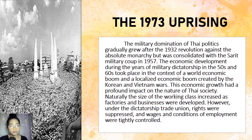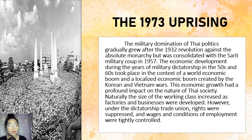Economic development during the years of military dictatorship in the 1950s and 60s took place in the context of a localized economic boom created by the Korean and Vietnam Wars. However, this economic growth had a profound impact on the nature of Thai society — the size of the working class increased as factories and businesses were developed. Yet under the dictatorship, trade union rights were suppressed and wages and conditions of employment were tightly controlled, resulting in the overthrow of the military dictatorship.